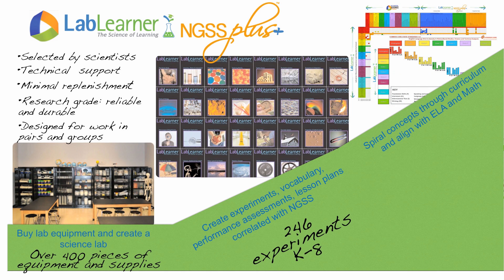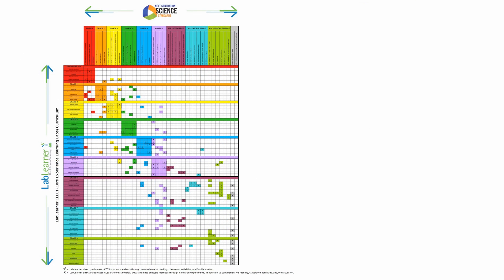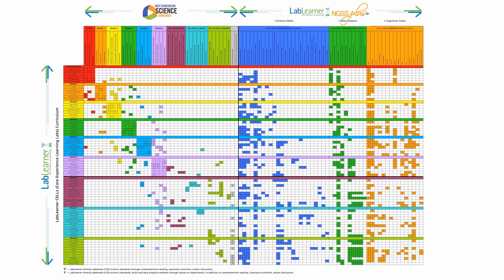Here's another way to look at Lab Learner and the next generation science standards. What you see here are the Lab Learner units along the vertical axis and the next generation science standards core ideas along the x-axis. The Lab Learner program aligns conceptually with the disciplinary core ideas of the next generation science standards. In addition, the right side of the matrix includes skills, analyses, and cognitive processes that are so important for scientific thinking, so you are developing a way for your students to practice science and think scientifically.